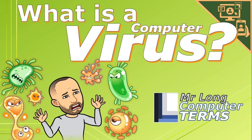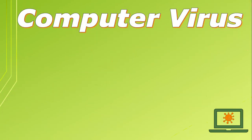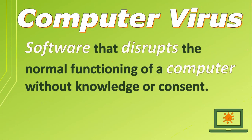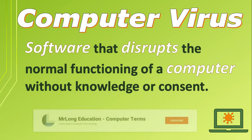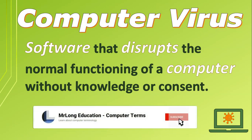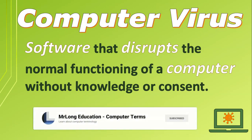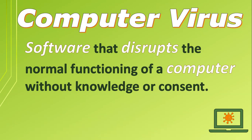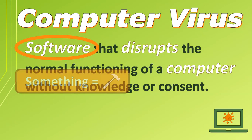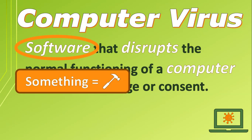What is a computer virus? A computer virus is software that disrupts the normal functioning of a computer without the user's knowledge or consent. The key word in this definition that people forget is software. If you say a virus is something that disrupts your computer, then you have also described a hammer. Make sure that you mention that it is software or a program.